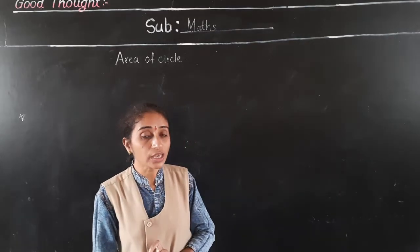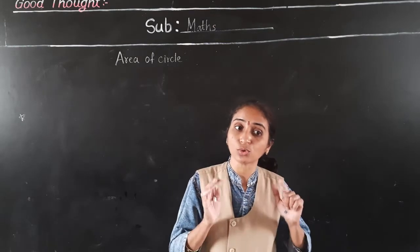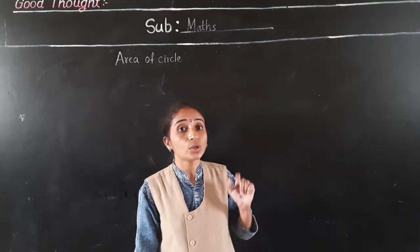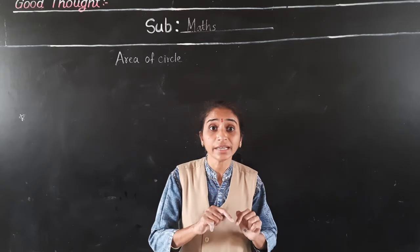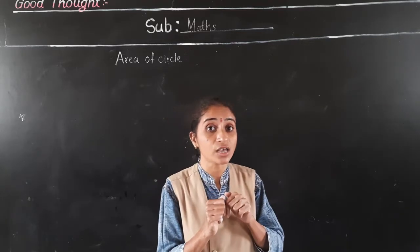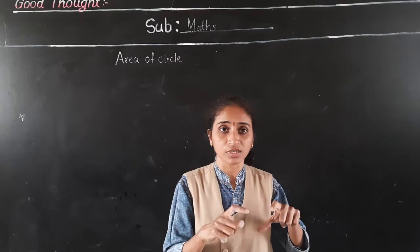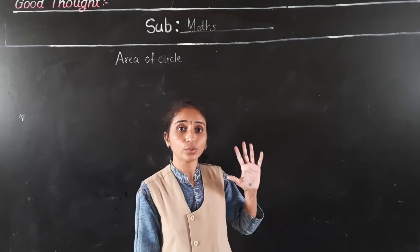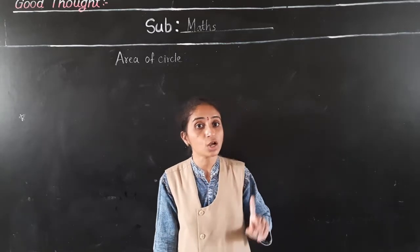Now let's see the area of a circle. Draw a circle of radius 5 cm on graph paper — this activity you have to do on graph paper. Find the area by counting the number of squares enclosed. Last year you learnt to find the area of a figure using graph paper.